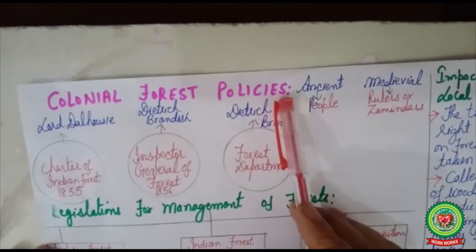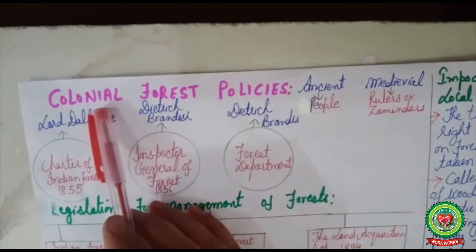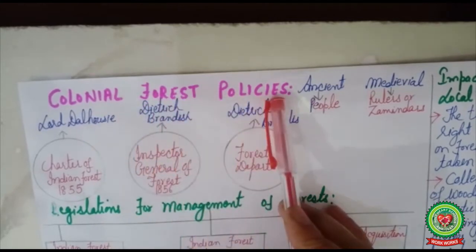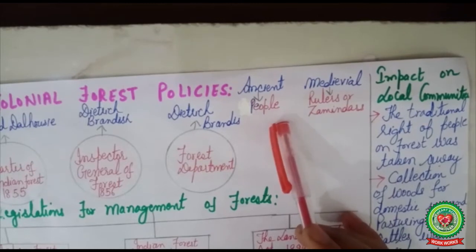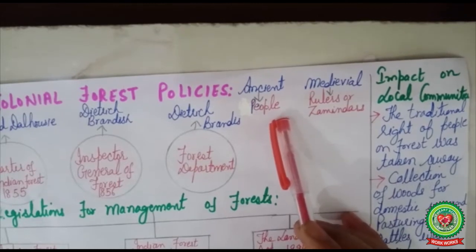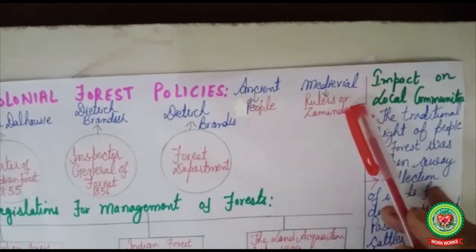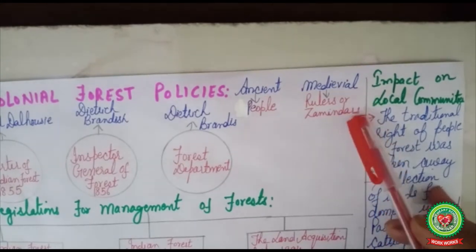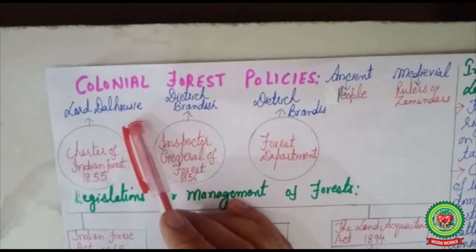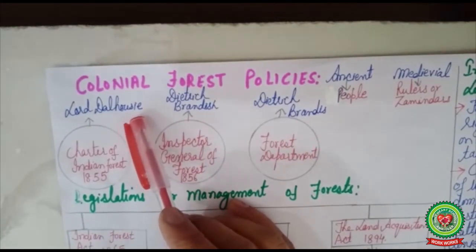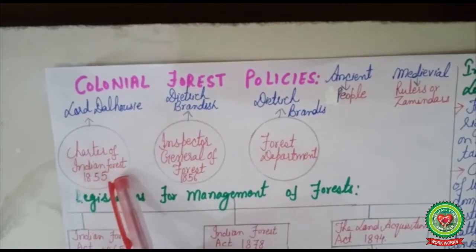Now we will discuss the colonial forest policies. Apart from developing modern industries in India, the British also took interest in the forest policy. In ancient times, forests were under the common people, who were the owners and could use them according to their own wish. In the Mughal period, rulers or zamindars became the owners. Lord Dalhousie was the first Governor General who took interest in the forest policy of India — in 1855 he issued the Charter of Indian Forest.